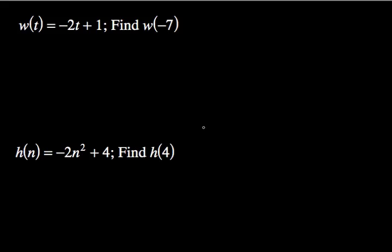Let's start at the top. Now, w of t equals negative 2t plus 1. The function definition means the name of the function is w. The input of the function is t, so anywhere we see t is actually the input. It says find w of negative 7. Anywhere we see negative 7, we're going to be inputting that into the function where it shows t.